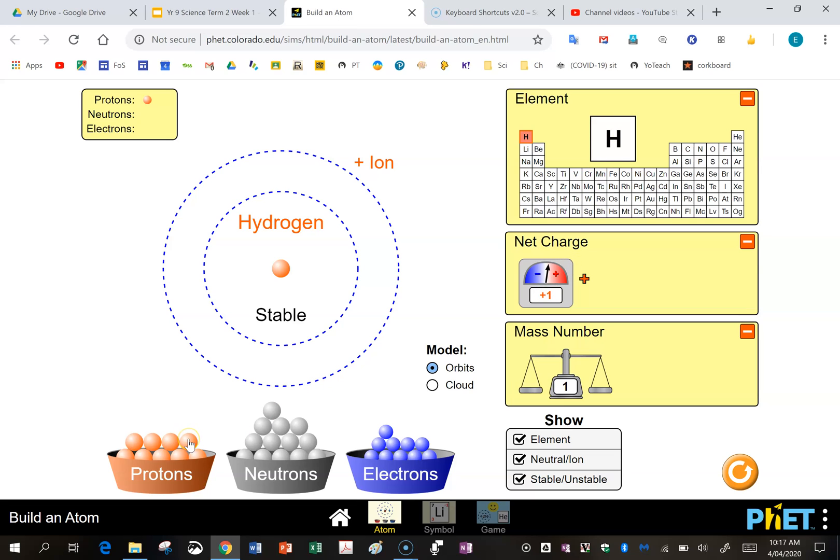Now if we throw in another proton, remembering that each proton takes you to a different element. So two protons, we move to helium. Now unstable, still an ion because we don't have any electrons in. Throw in another proton, we've moved to lithium. Throw in another proton, we've moved to beryllium. So you should be getting the idea that every time you increase the number of protons, you move along the periodic table. Now let's go back to hydrogen.